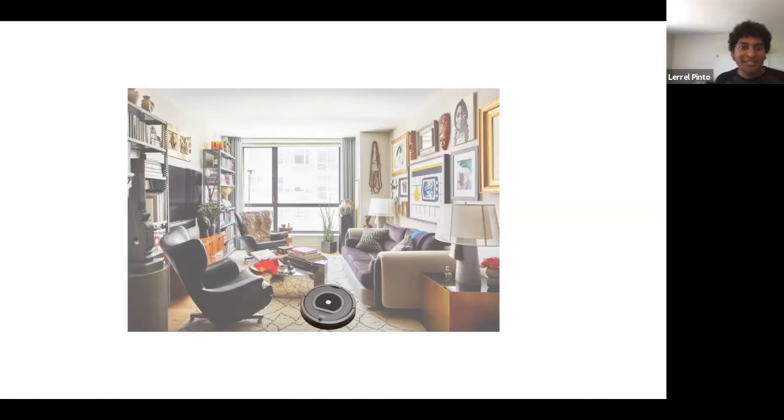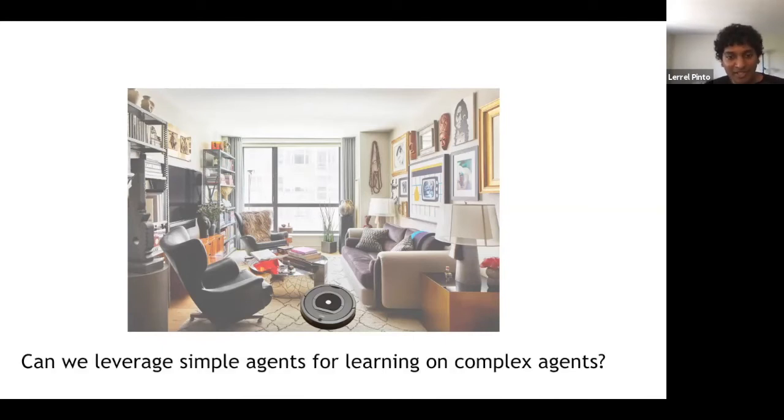On the other hand, let's say we had a much simpler robot, like let's say a Roomba. Now this robot has a much smaller action space, which means that it can probably learn how to navigate much faster than the quadruped robot. Moreover, since this robot is small and light, if it hits you, it's probably not going to hurt you that much or not going to make some big damage inside the house. So this begs the question, can we actually leverage the learning from a simpler agent for the learning on more complex agents?